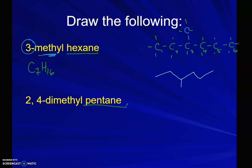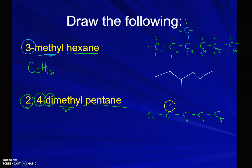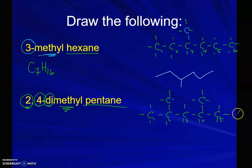Now let's do 2,4-dimethylpentane. Pentane is going to be our longest chain: 1, 2, 3, 4, 5. I am going to put two methyl groups off of carbons 2 and 4. Then I fill in my hydrogens as needed. Either structural representation is acceptable, and they both have 7 carbons and 16 hydrogens.